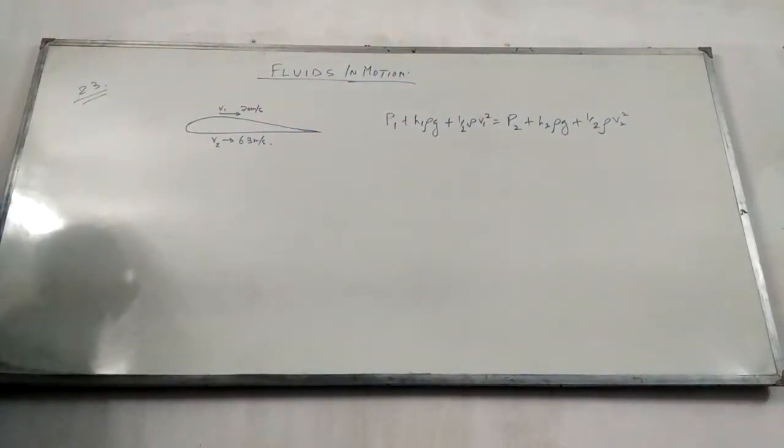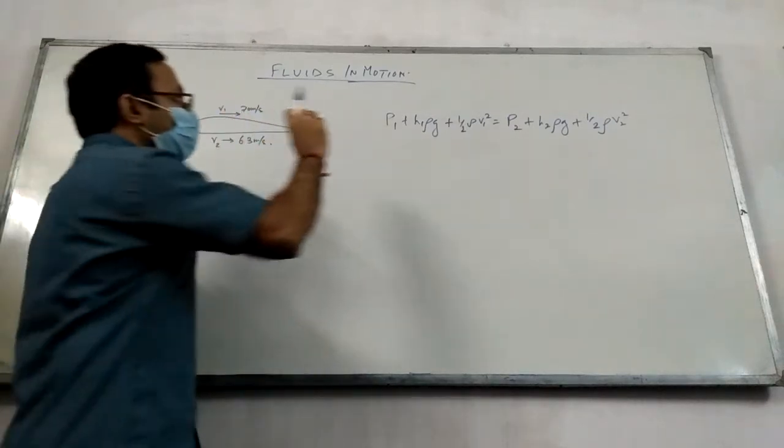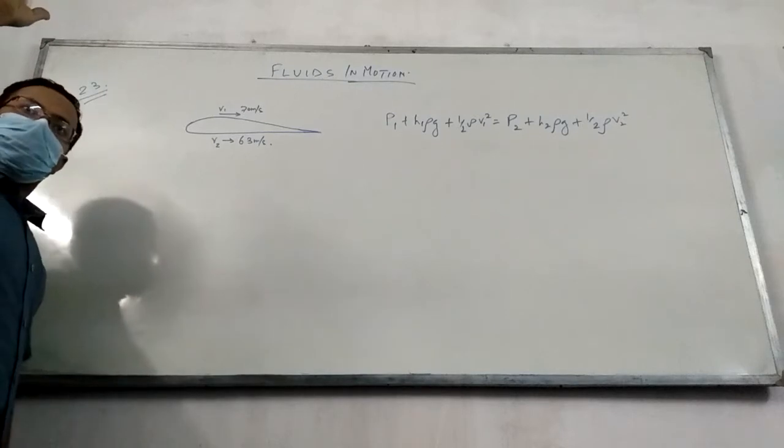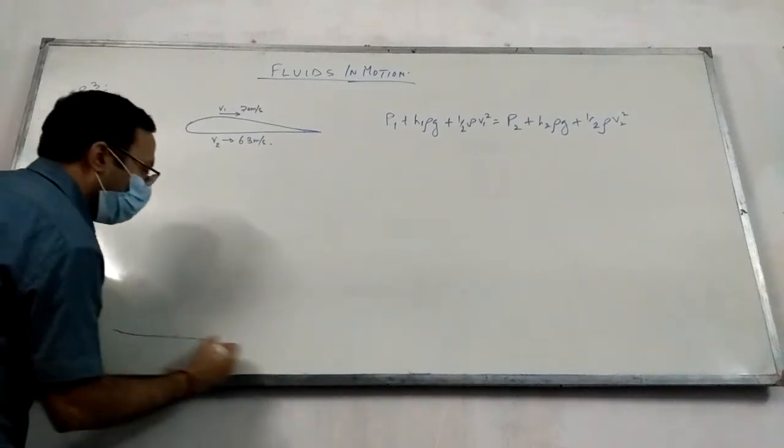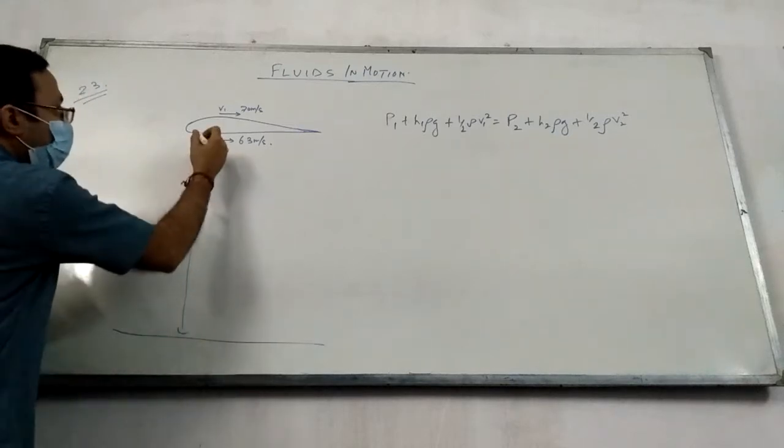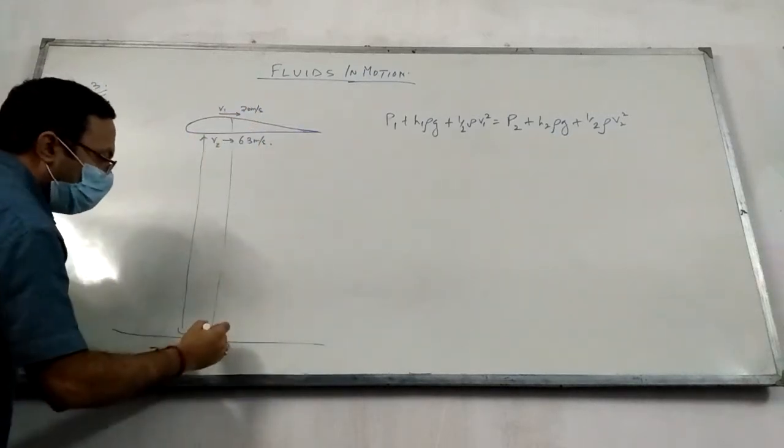This is according to Bernoulli's theorem. Now, in this case, when an airplane flies, it flies at a very high altitude. So the altitude is so high that when we measure the height of the lower wing and upper wing,